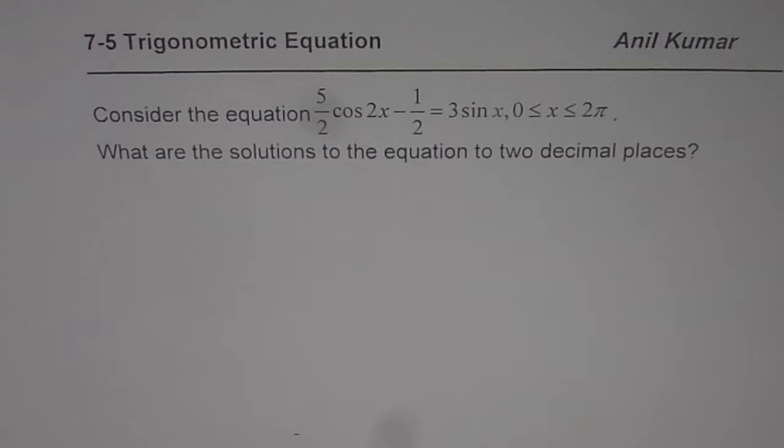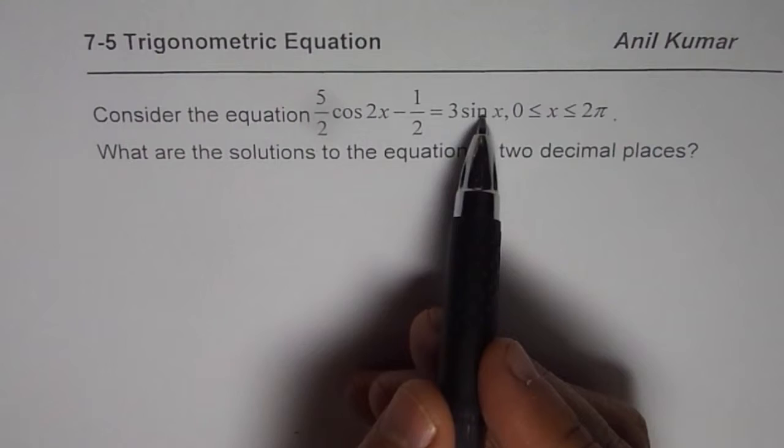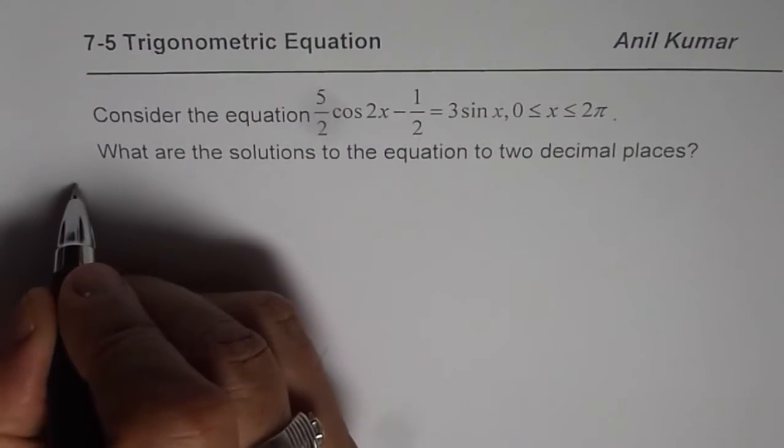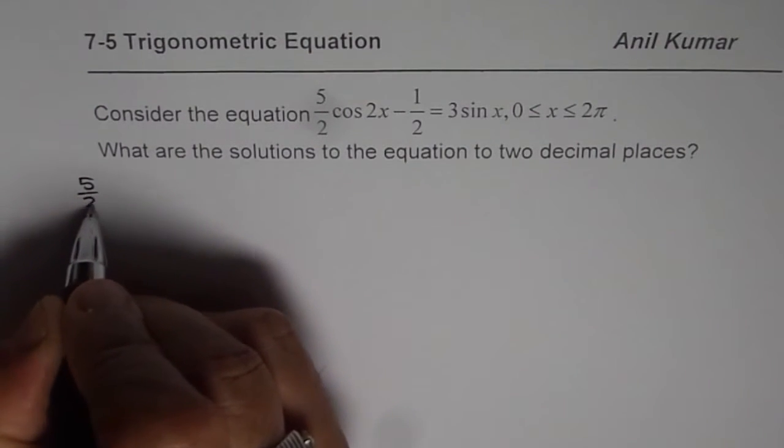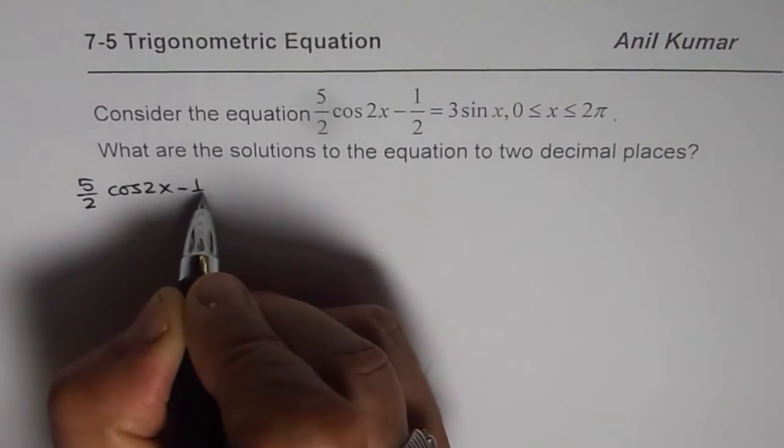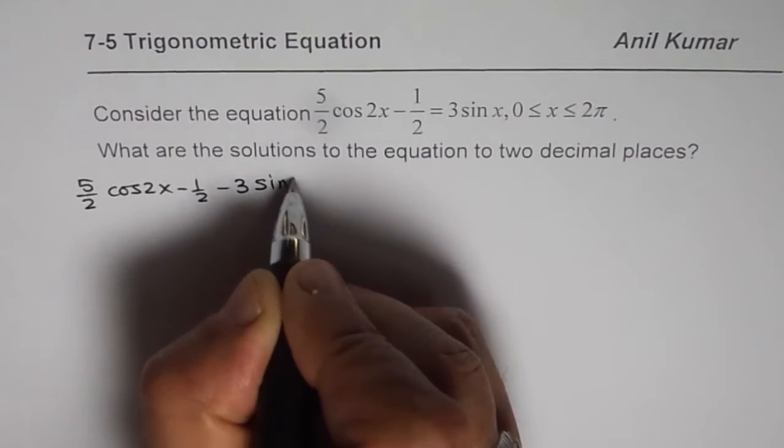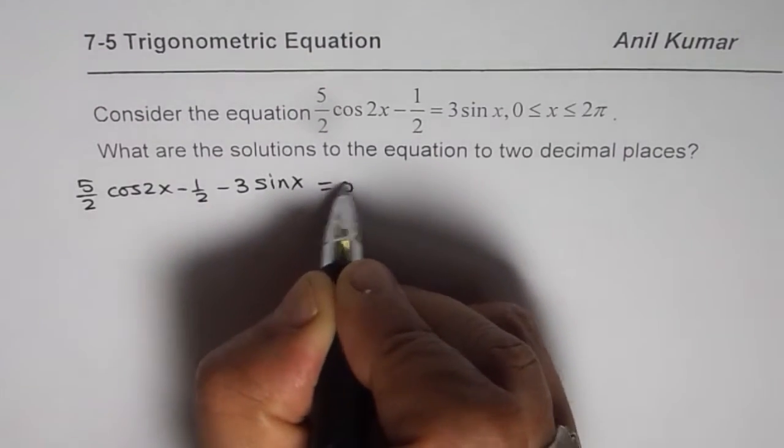You definitely need a calculator for this one. Let's begin by writing the equation, bringing all the terms to one side. So we have 5/2 cos(2x) - 1/2 - 3sin(x) equal to 0.